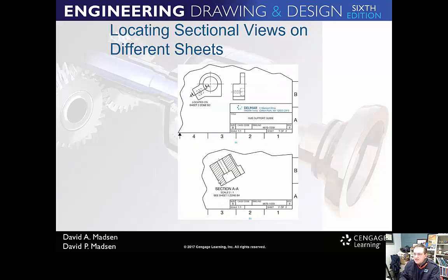Locating sectional views on different sheets: it's very important to label your sections if they're on a different sheet. If the cutting plane line is on Sheet 1 and the section view is on Sheet 2, Zone B3, you reference it that way. This is a use of zoning — letters running vertically and numbers running horizontally. In AutoCAD I don't have you set up zones, but in SolidWorks and Inventor it's already set up that way.